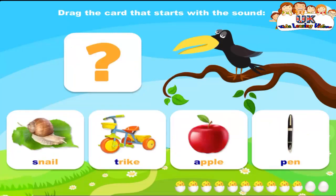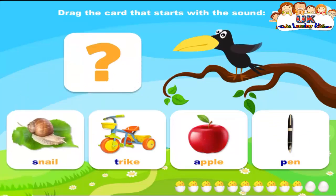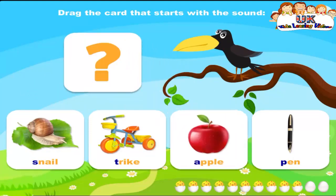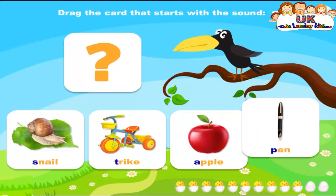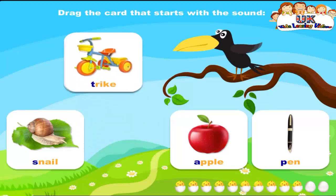Drag the card that starts with the sound T. Snail. Drag the card that starts with the sound T. Apple. Drag the card that starts with the sound T. Pen. Drag the card that starts with the sound T. Trike. That's right! T, t, trike.